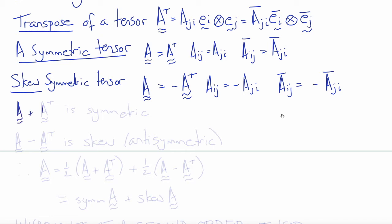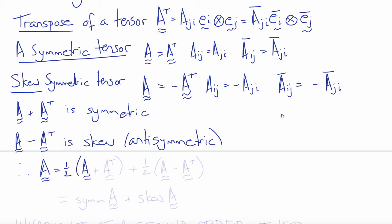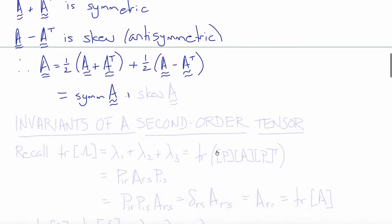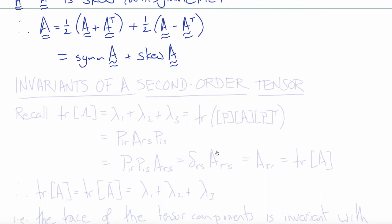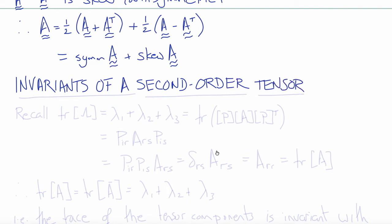The same is true for skew symmetry. A skew-symmetric tensor is defined as A equals minus A transpose. If we take A plus A transpose, this must always be symmetric, because the transpose of A plus A transpose is A transpose plus A. Similarly, if we take A minus A transpose, that tensor is always skew or anti-symmetric. It's always possible to decompose any second-order tensor into a symmetric part, sym A, which is one-half of A plus A transpose, and a skew part, skew A, which is one-half of A minus A transpose. This is the so-called symmetry decomposition and is useful in continuum mechanics, particularly when we look at fluids.